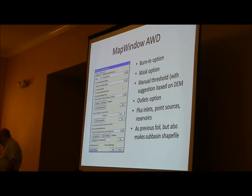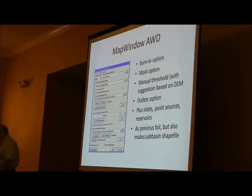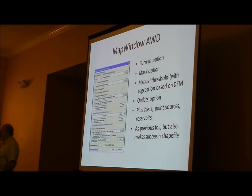If you look at the automatic watershed delineation form in the latest version, at first glance it looks exactly like the old one — I've tried to keep the user interface very much the same. In fact, there are only two things that have appeared: two values at the bottom, which are the number of processes and the show output tick box. We still have the burning option if you know where your streams are — particularly useful if you've got a fairly flat area where automatic tools are basically guessing. You can burn in the stream, which reduces the depth of the DEM along the line of the stream, and then you do all the calculations.